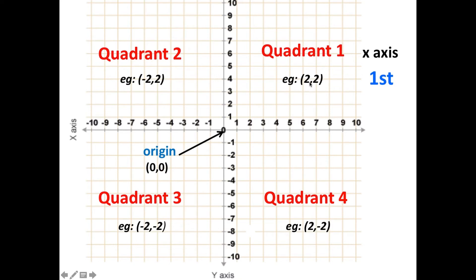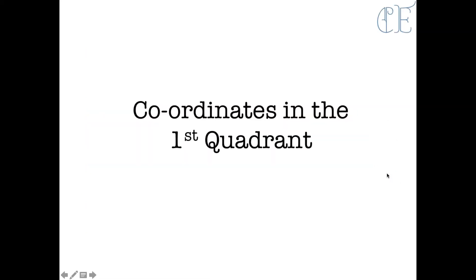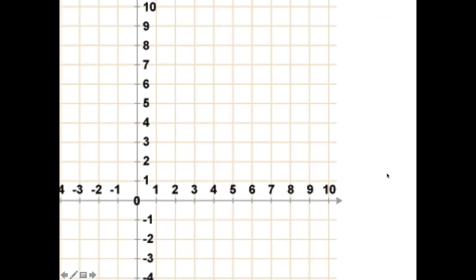We always do the x-axis first. So if you are given a coordinate like (2, 2), two would be along the x-axis first and then two up. Have you heard the phrase 'across the landing and up the stairs'? That might help you remember — you go across first, then up or down. X first, Y second.